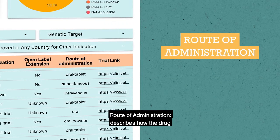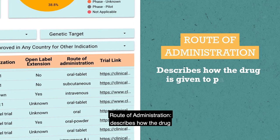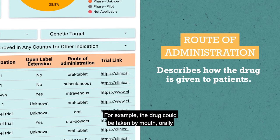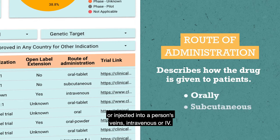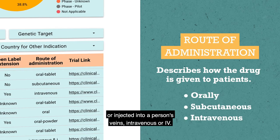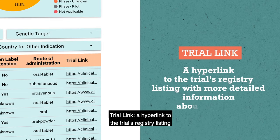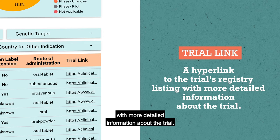Route of administration: describes how the drug is given to patients. For example, the drug could be taken by mouth — orally — or injected into a person's veins, intravenous, or IV. Trial link: a hyperlink to the trial's registry listing with more detailed information about the trial.